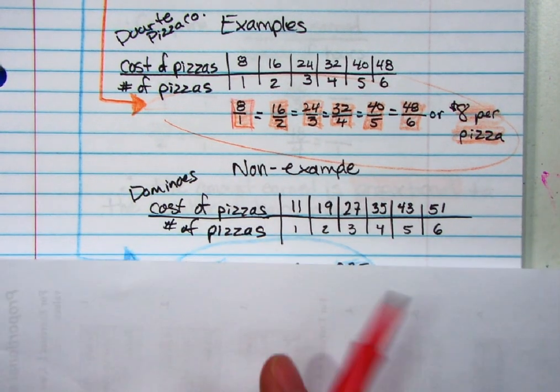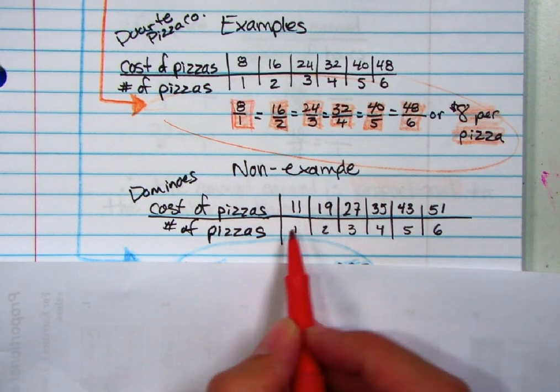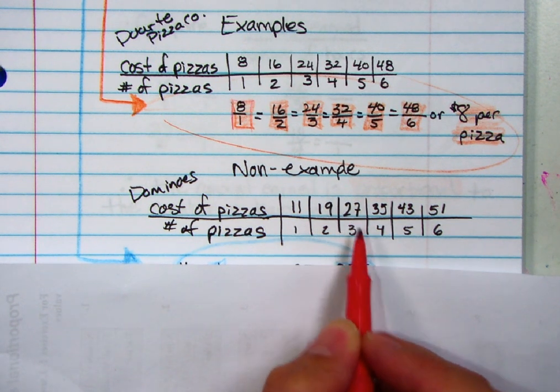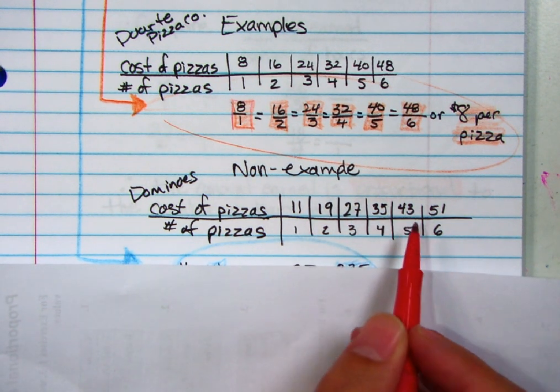Now let's take a look at another one. Domino's Pizza. If I listed my costs, one pizza costs me eleven dollars, two costs nineteen dollars, three costs twenty-seven dollars, four costs thirty-five dollars, so on and so forth.